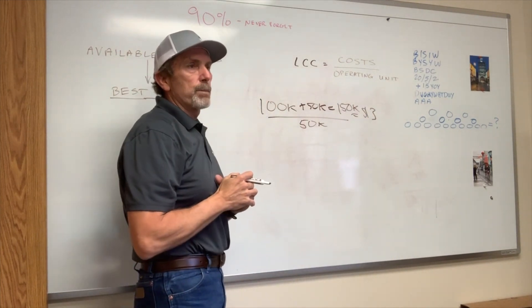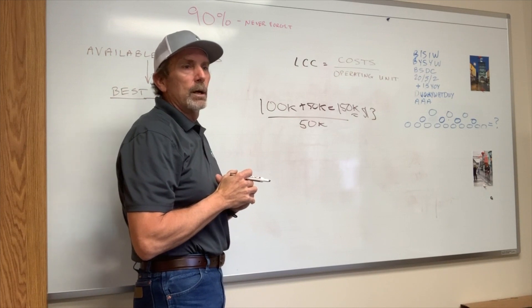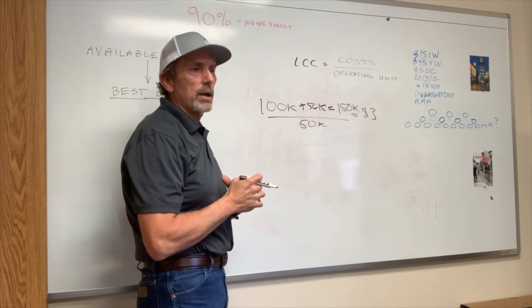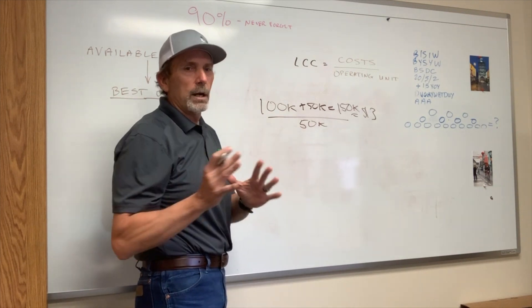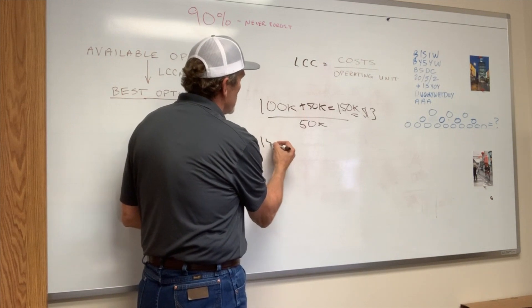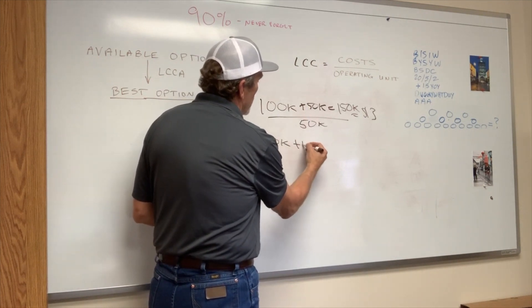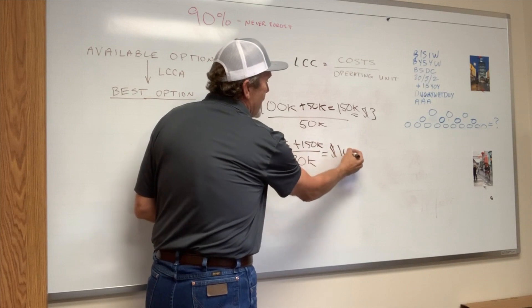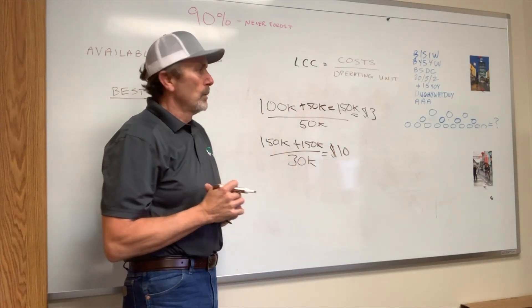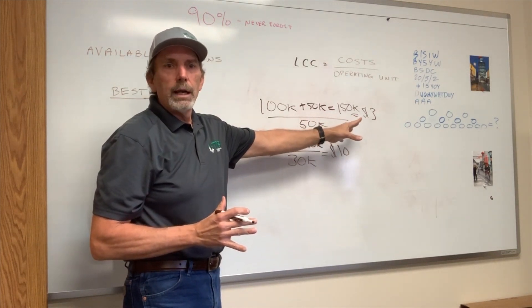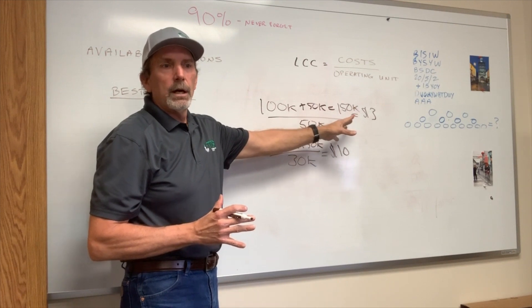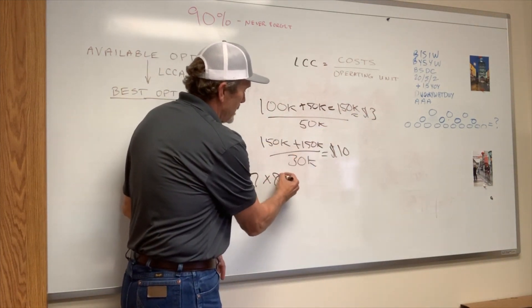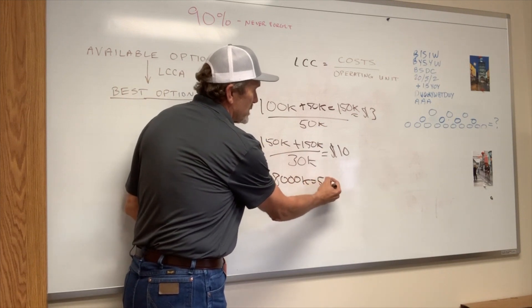In reality, what we were finding is the part was failing prematurely after performing a repair to the component. In this instance, we were spending an additional $150,000 per unit over the operating interval of that part. Our life cycle cost went from $3 an hour to $150,000 of additional cost divided by a 30,000-hour operating interval, resulting in a $10 per hour life cycle cost. That $7 per hour incremental increase, multiplied by 8,000 hours of operation per year, resulted in an additional cost of $56,000 per year.